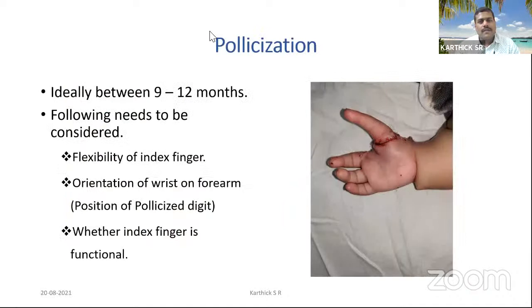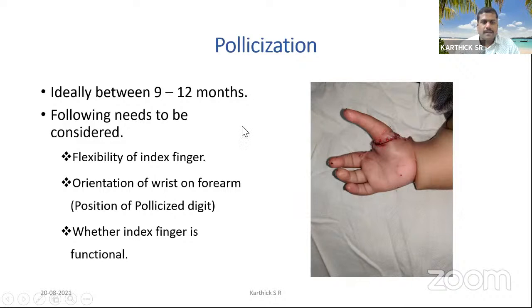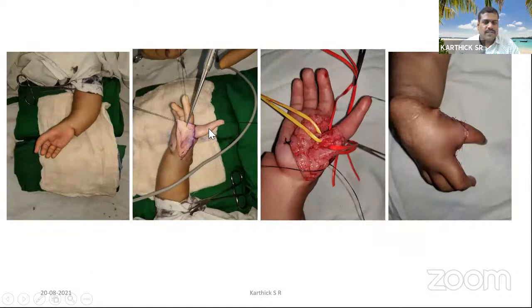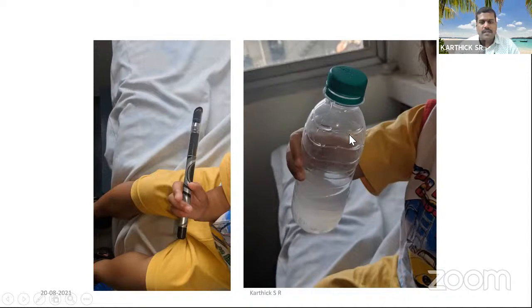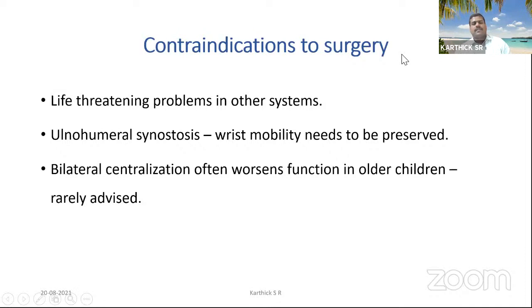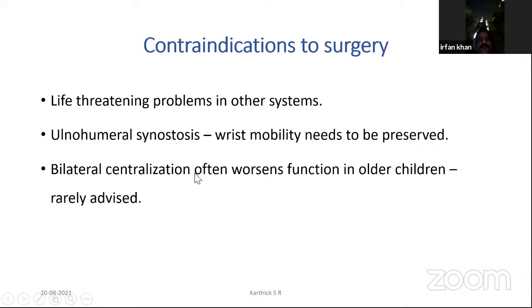Regarding pollicization: ideally it should be performed between nine to twelve months of age. Radial club hand surgery can be done after six months of age. Before any thumb reconstruction surgery, the flexibility and functional ability of the index finger must be assessed — this is critical before pollicization. A case example shows conversion of the index finger along with the second metacarpal bone into a thumb to achieve pincer and grasp function, enabling the child to hold a bottle. Contraindications to surgery include life-threatening systemic or cardiac problems, elbow stiffness such as humeroradial synostosis, and bilateral cases where centralization may worsen function.